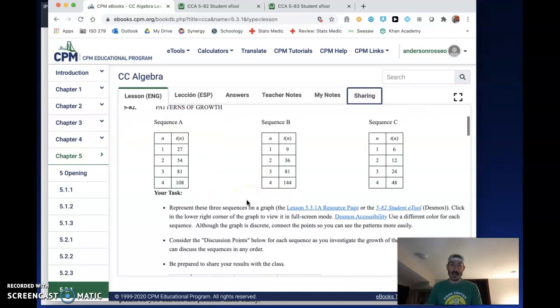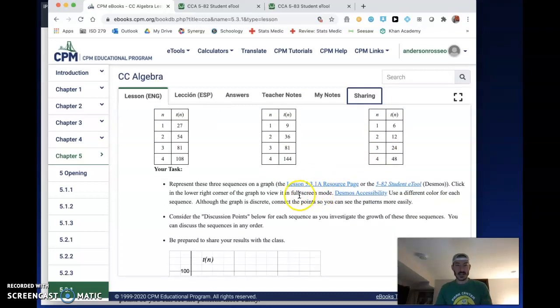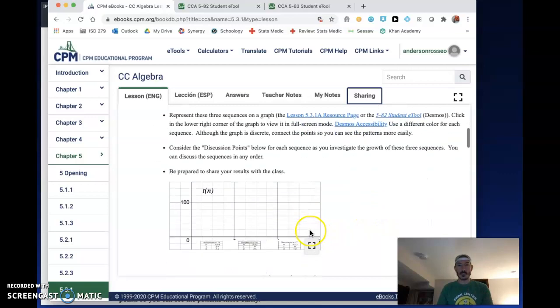So we've got three sequences: sequence A, B, and C. Sequence A looks like this, sequence B looks like this, sequence C looks like this. I've got the first four terms of each sequence. They all start in different spots - Sequence A starts at 27, sequence B starts at 9, sequence C starts at 6, and they all grow differently. In just a second, we're going to check out what all of these things look like graphically using the e-tool. If you're logged into your CPM e-book, you can see it there using the 5-82 e-tool.